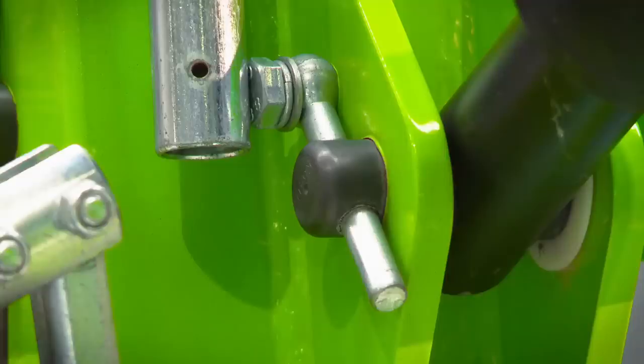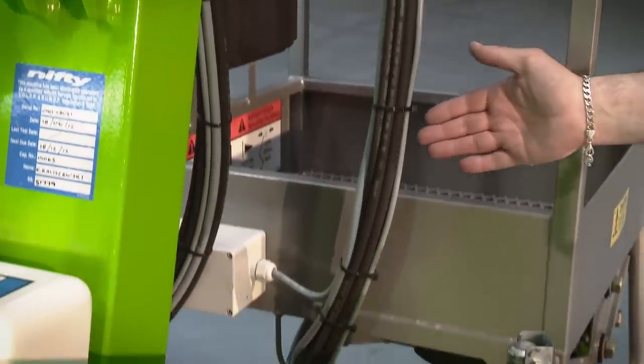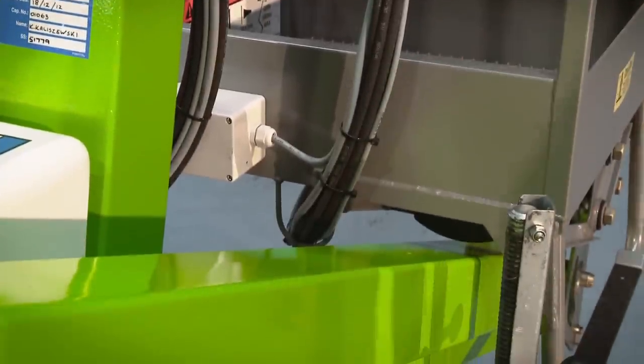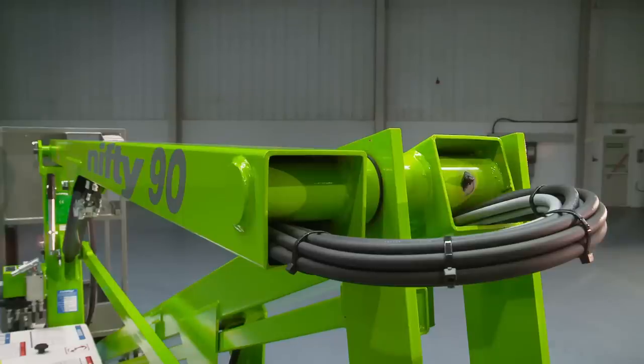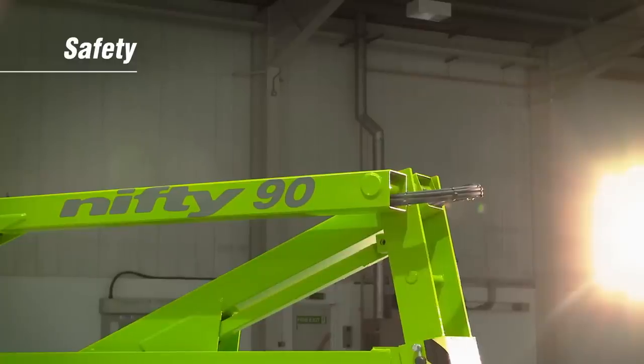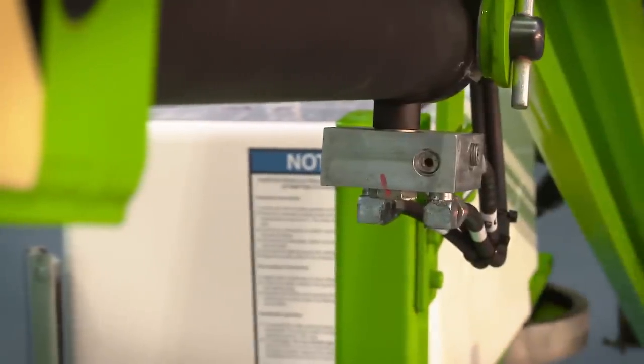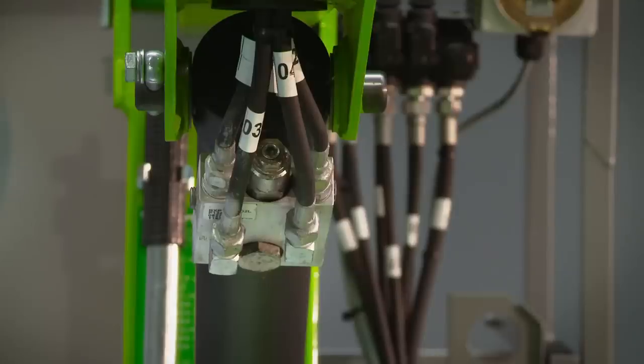With maintenance free pins and bushes, durable hydraulic hoses and only a few easy to access grease points to service, maintaining the Nifty 90 is quick and simple. Every Nifty lift incorporates check valves and all hydraulic rams to ensure that in the unlikely event of a hose failure, the machine will remain safely in position until the operator activates the controls.